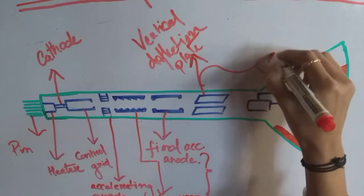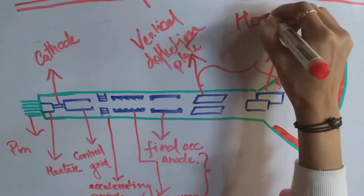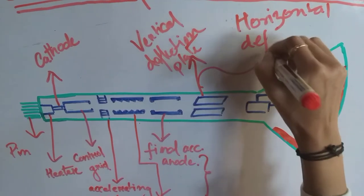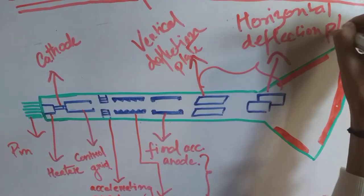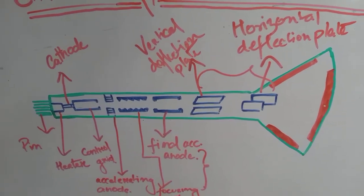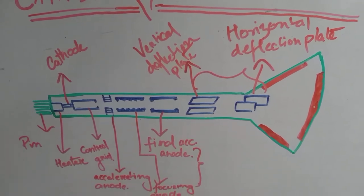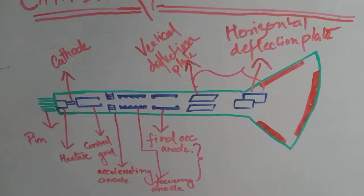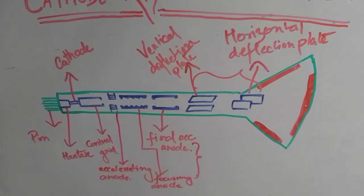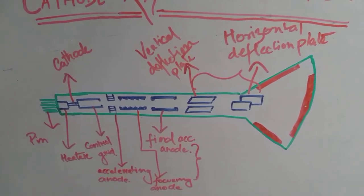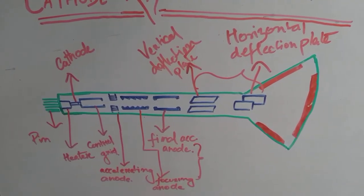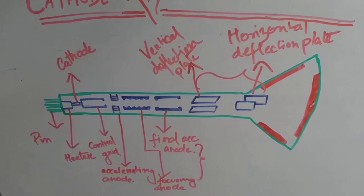Then we have the deflecting system: a vertical deflection plate and a horizontal deflection plate. In the absence of any potential applied to the deflecting system, the electrons are focused at the center of the fluorescent screen since no potential is applied to any of the plates. But when a potential difference is applied to any of the plates, the behavior changes.